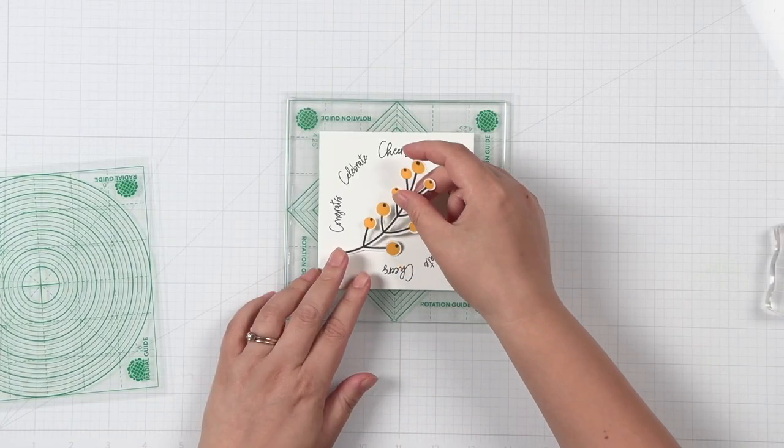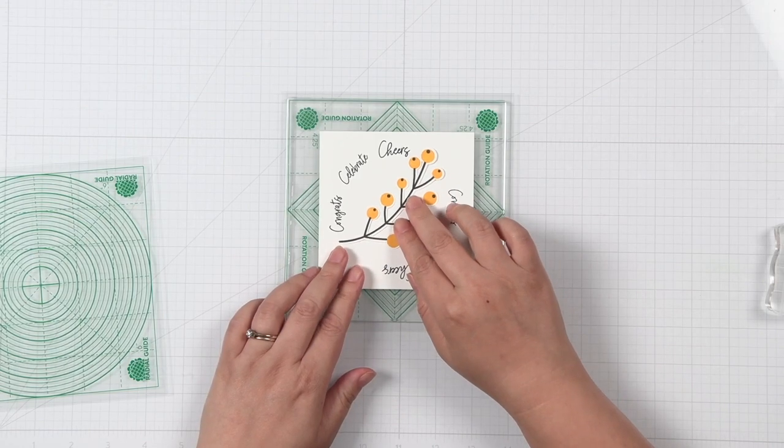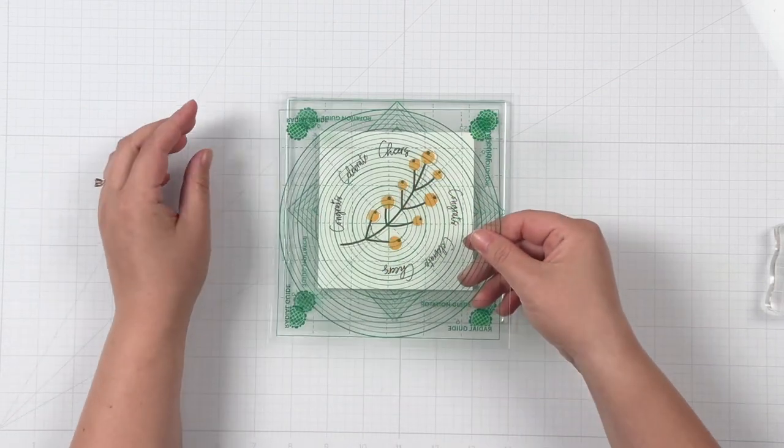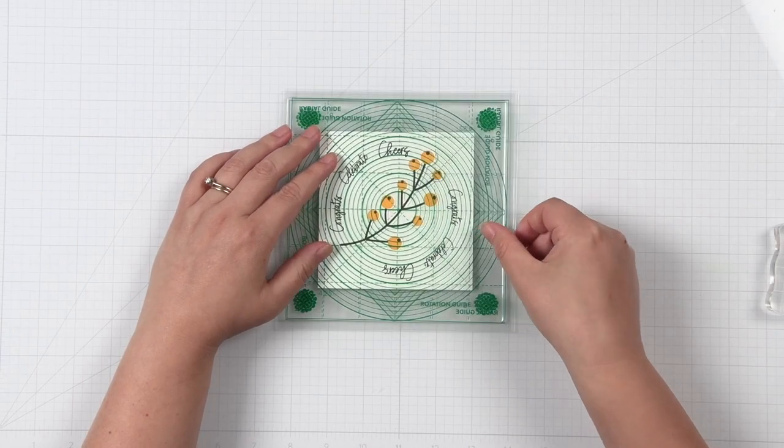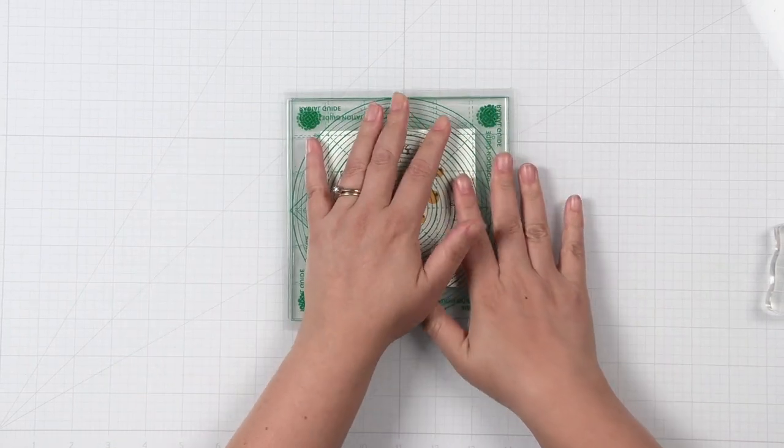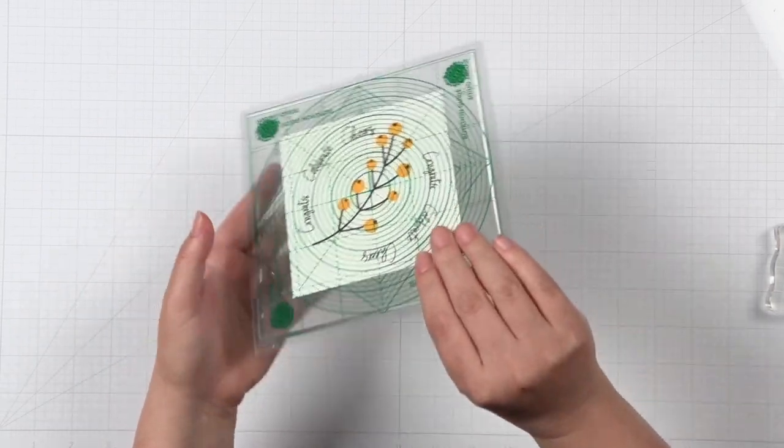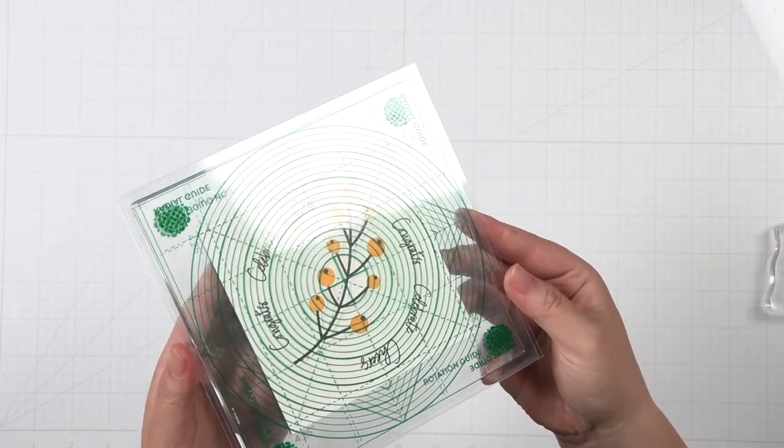They can also serve as a project saver to help hold your pieces together in between crafting sessions. The Waffle Flower Grip Mat reduces taping and masking significantly so you can spend more time playing.